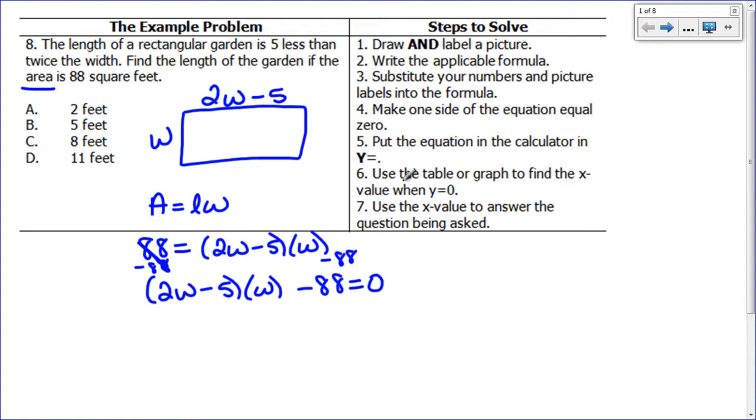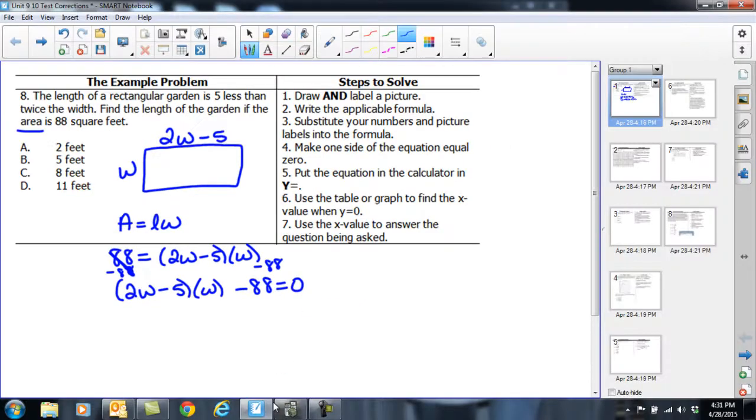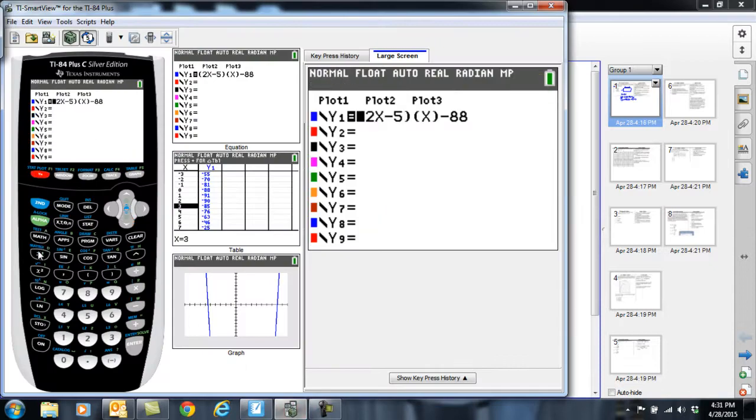Now it says I'm going to put my equation in the calculator into Y equals. So I'm going to go to my calculator right here and I'm going to go to Y equals and type in that equation just like I wrote it, except it's going to have X's instead of W's. So I'm going to have my 2X minus 5 in parenthesis times my X in parenthesis, then minus 88.